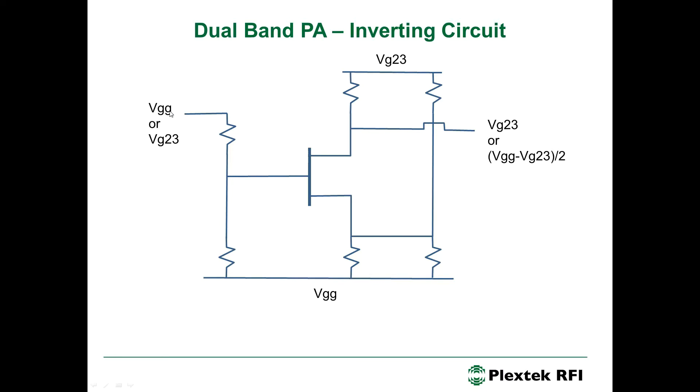But we came up with this circuit here to provide the complementary control. So, at the input over here, we can apply VGG or VG two, three. And at the output here, we'll get VG two, three or VGG minus VG two, three over two. And the supply rails are VG two, three at the top and VGG at the bottom. Now, to illustrate this with some numbers, it becomes slightly more clear. So, if we assign minus five volts to VGG and we assign minus 0.6 volts for VG two, three, you can see that when we input minus five volts, we get minus 0.6 volts. And this would be used to switch devices coupled to the gate on. And when we apply minus 0.6 volts here, which is a typical value for VG two, three, we would get minus 2.2 volts out. And this will be sufficient to reverse bias or pinch off those gate switch devices.